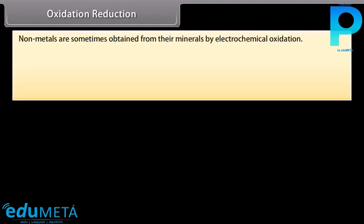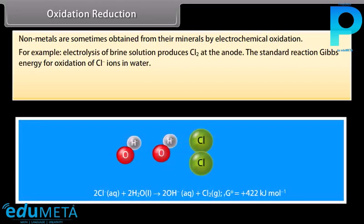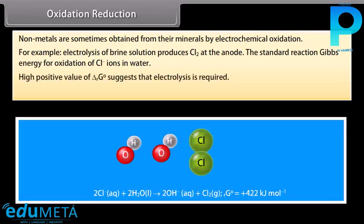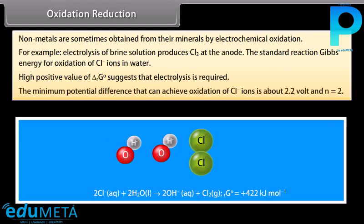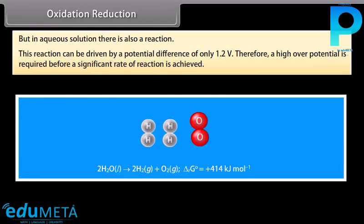Electrochemical oxidation: Non-metals are sometimes obtained from their minerals by electrochemical oxidation. For example, electrolysis of brine solution produces Cl₂ at the anode. The standard reaction gives energy for oxidation of Cl⁻ ions in water. The minimum potential difference to achieve oxidation of Cl⁻ ions is about 2.2 V (n = 2). However, in aqueous solution there is also a competing reaction driven by only 1.2 V, so a high overall potential is required before a significant rate of reaction is achieved.